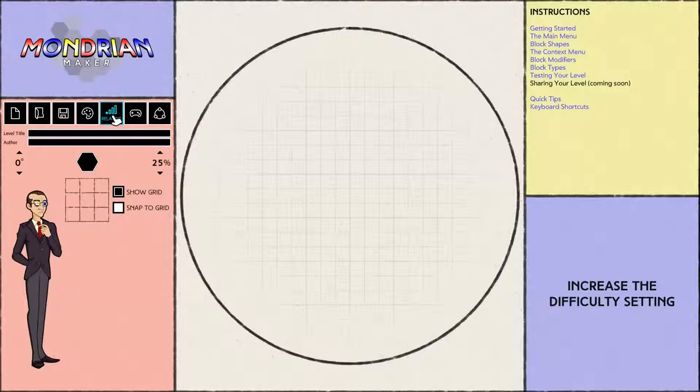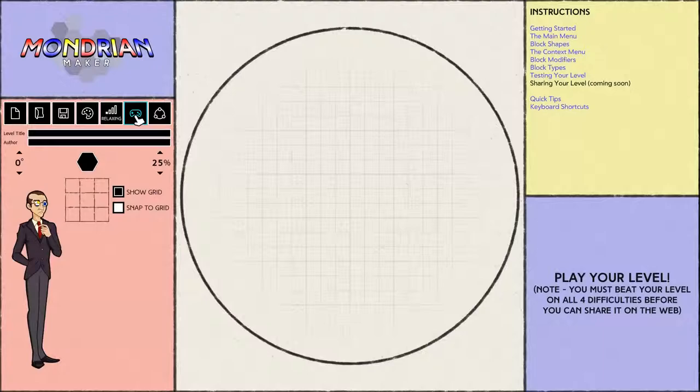The Difficulty button iterates the difficulty variant of your level. By using this button, you can change your blocks to assign different modifiers and block types to your level at each difficulty, essentially allowing you to turn one level into four. And finally, we have the Play Level button. This is the button that you click to test out your level at the currently selected difficulty.